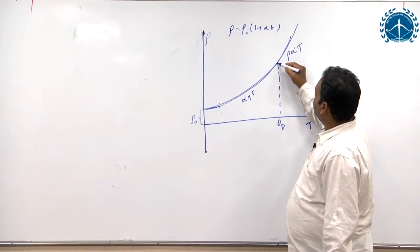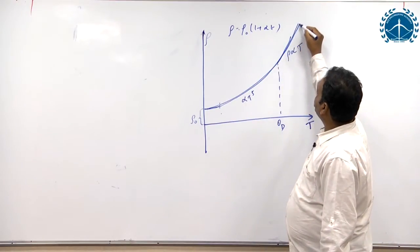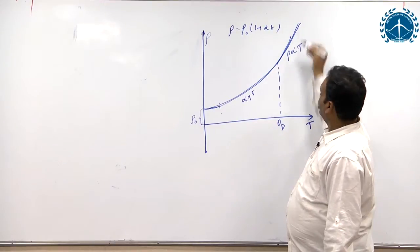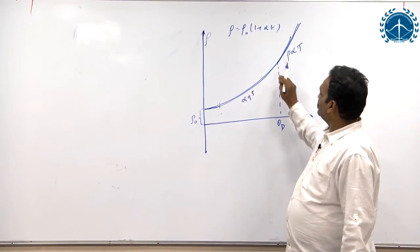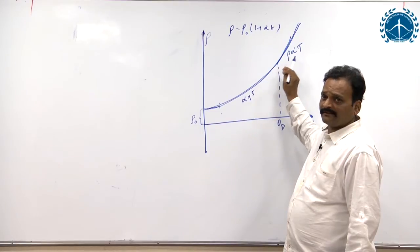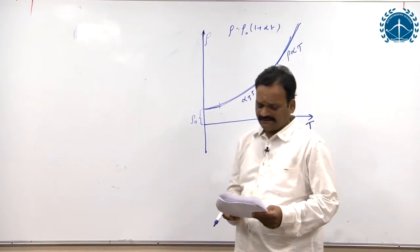So the temperature above which resistivity becomes proportional to temperature is called Debye temperature. It is close to room temperature for many metals. So the option is C, Debye temperature.